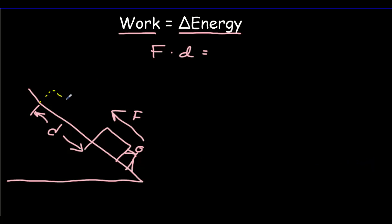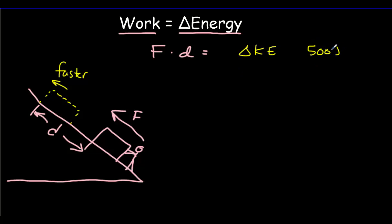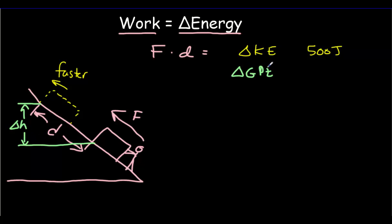One thing is that perhaps your box is now moving faster. If it's moving faster, it's got more kinetic energy — there's going to be an increase in the kinetic energy of the box. Let's say that was equal to 500 joules. A second energy transformation that might occur would be an increase in height energy — an increase in what we call gravitational potential energy. The box is now up higher, so let's say there's an increase in the gravitational potential energy of 400 joules.